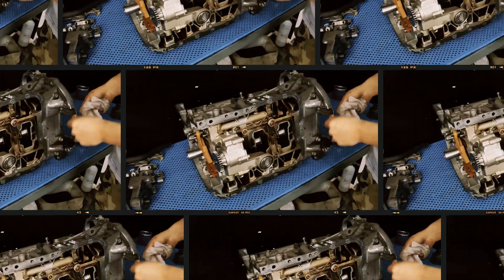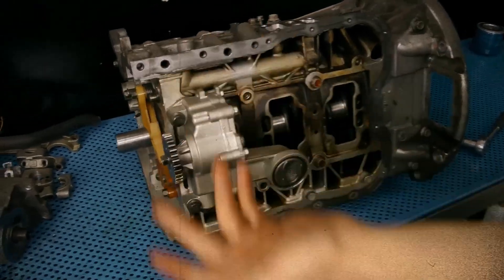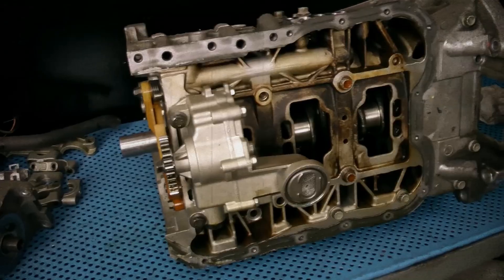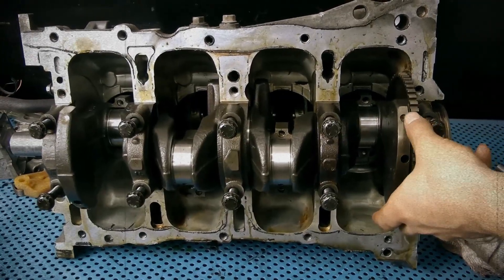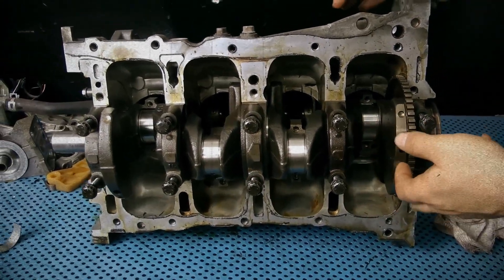Despite improvements, connecting rod bearings remain undersized. Oil starvation or poor quality lubricant can spin a bearing and seize the crank, especially in all-wheel drive models or cars run on extended drain intervals.